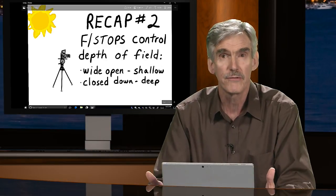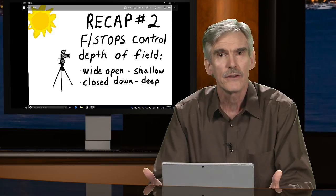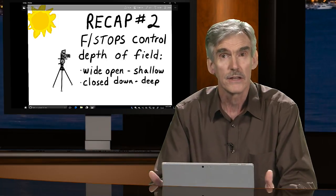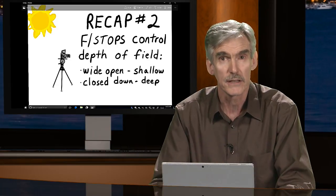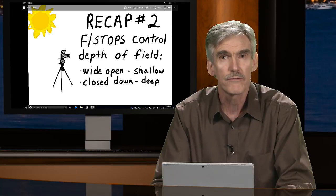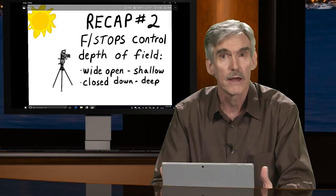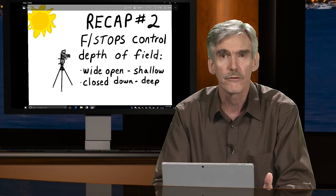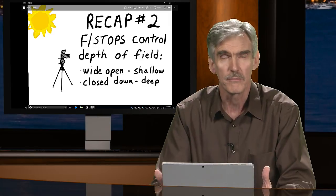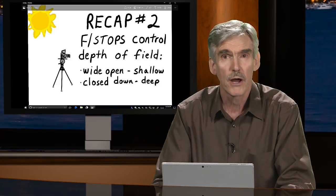F-stops control depth of field. Depth of field is the way we measure the amount of material in the image that's actually in sharp focus, and that is important as we talked about when focusing light. Depending upon the f-stop you're using it will affect depth of field. With a wide-open aperture — an f-stop of 4 with a 100mm lens or f/2 with a 50mm lens — you're going to have very shallow depth of field, meaning only the subject you're focusing on will be in sharp focus.